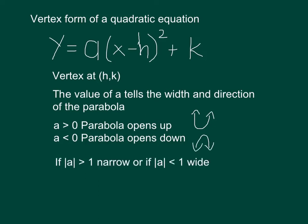Furthermore, if the absolute value of a is greater than 1, we get a narrower parabola than the parent. But if it's less than 1, let's say 0.05, then we get one which is quite wide.